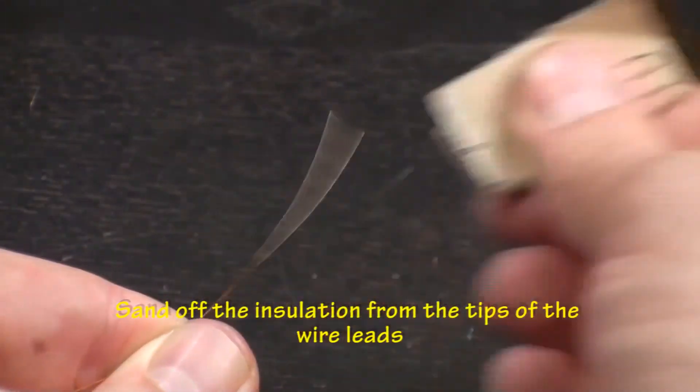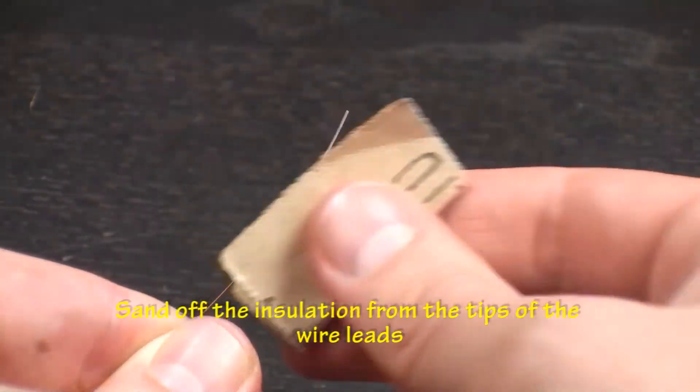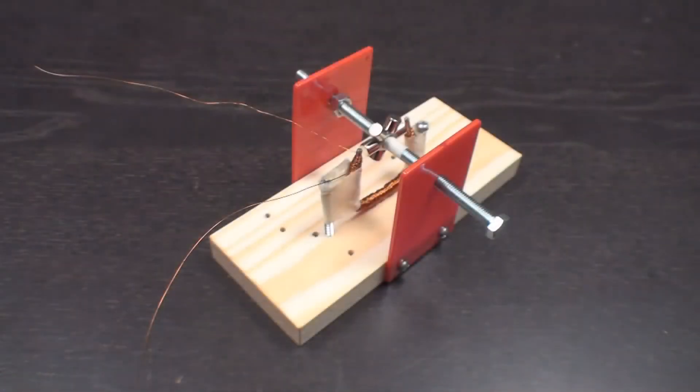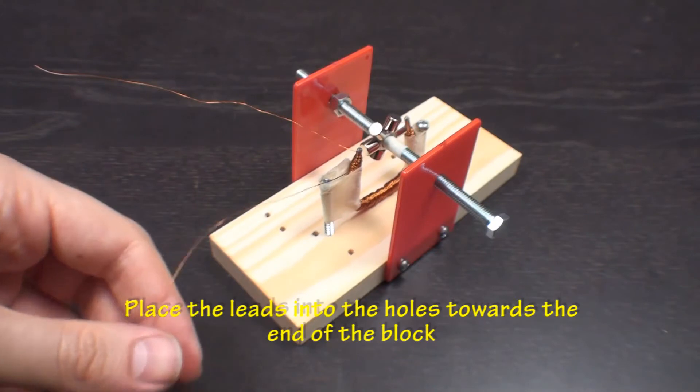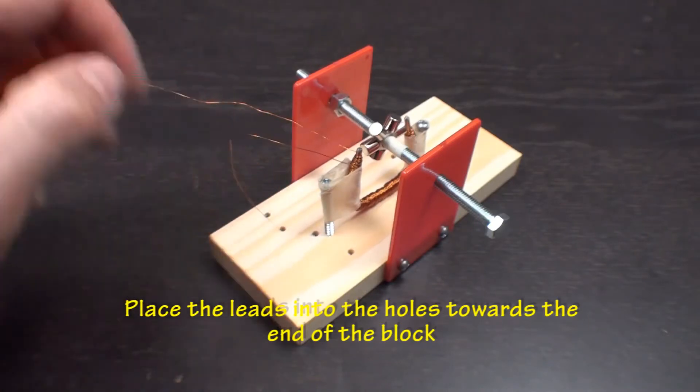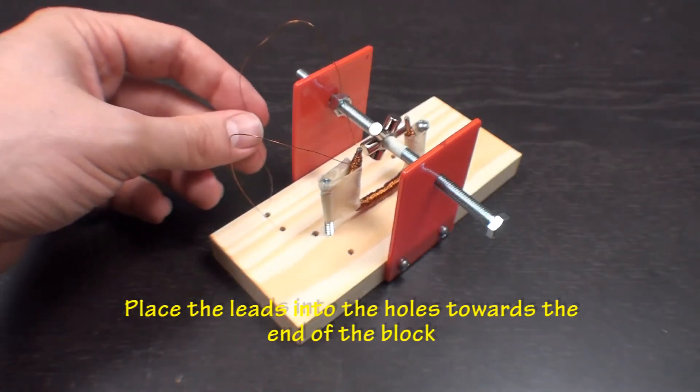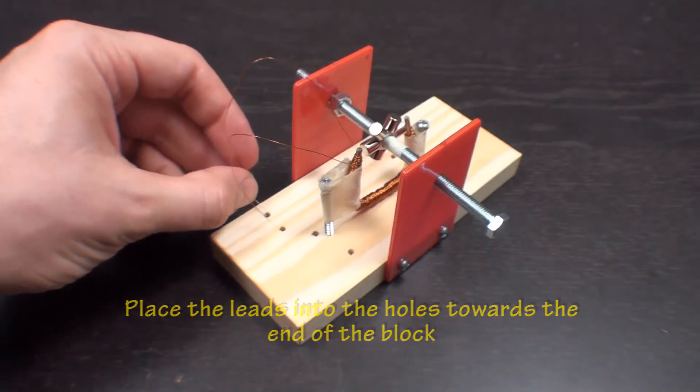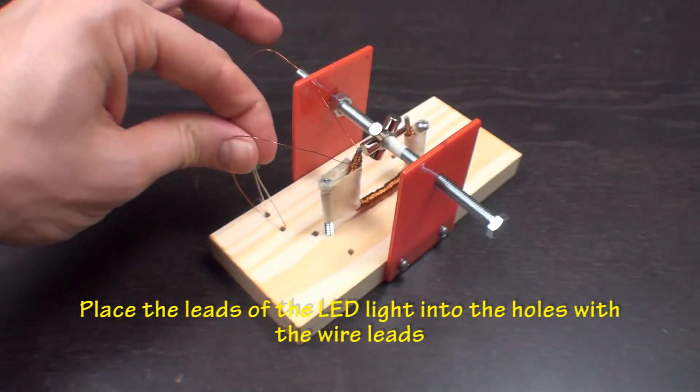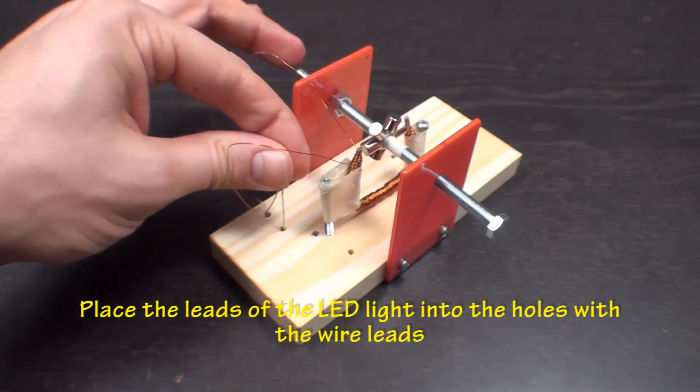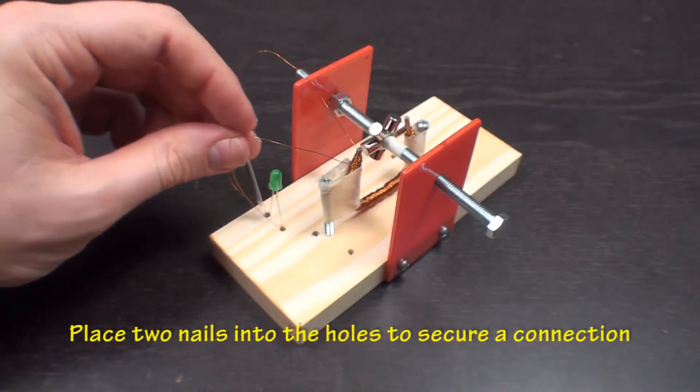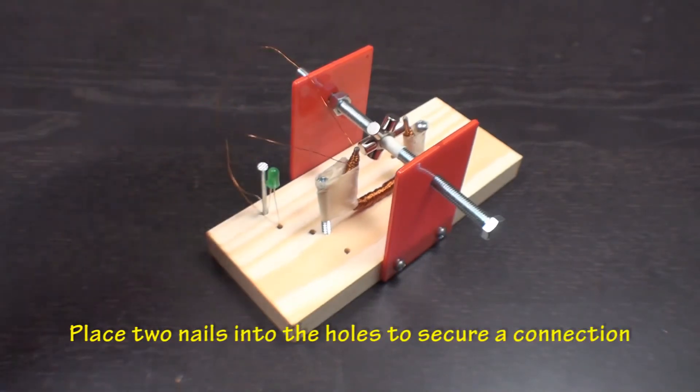Use the sandpaper to sand off the insulation from each of the leads of the magnetic wire. Place the leads into each of two holes at the end of the wood block. Now take an LED and place each one of its leads into the holes with the magnetic wire. Push a small nail into each of the holes to ensure a better connection.